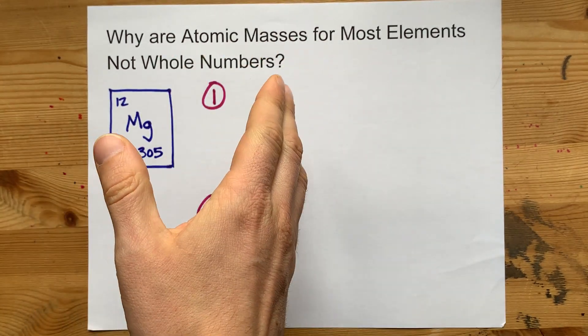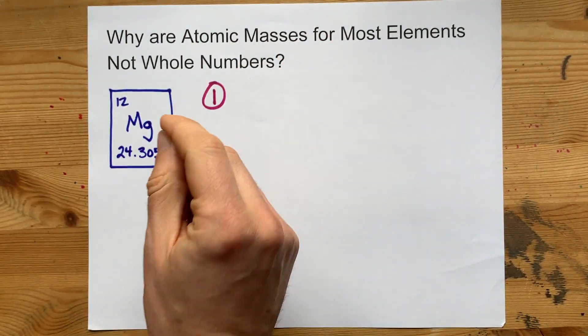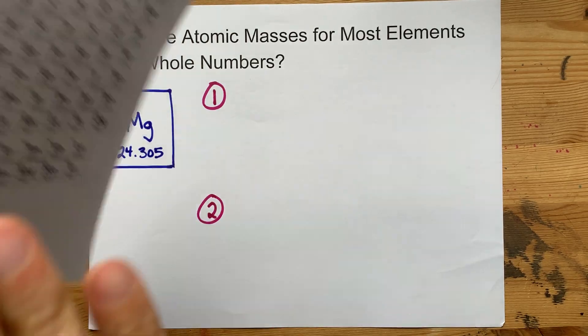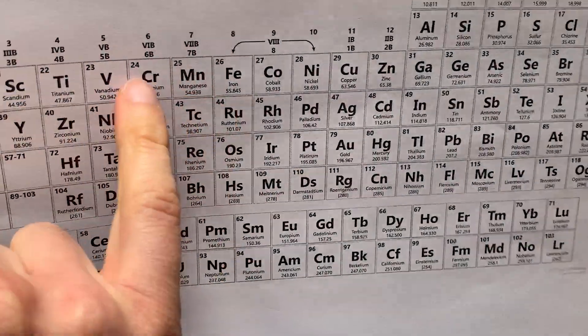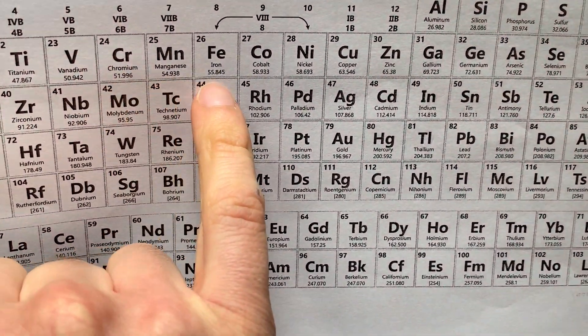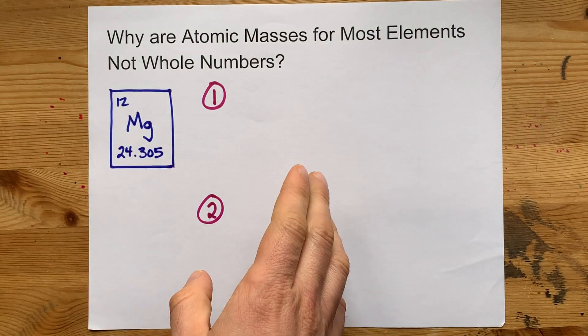Why are the atomic masses for most elements not whole numbers? This is easily apparent when you look at a periodic table. All of these have some obscure decimals written after them.